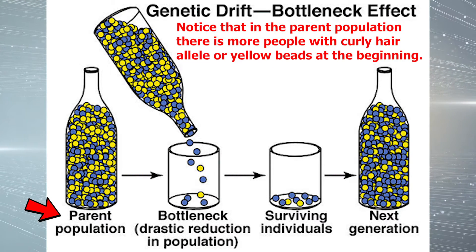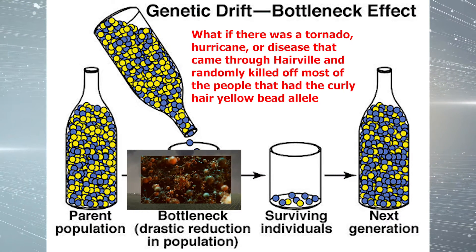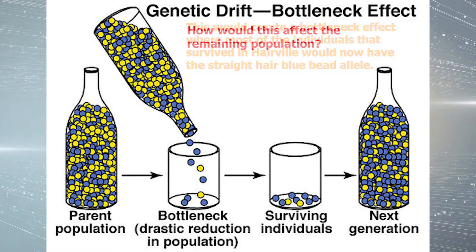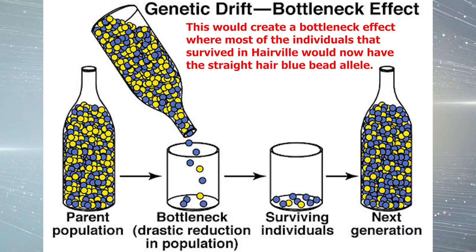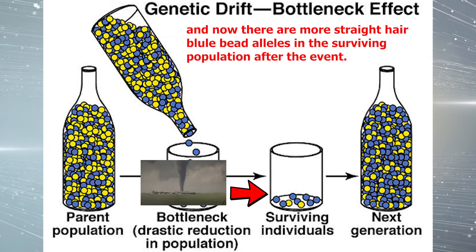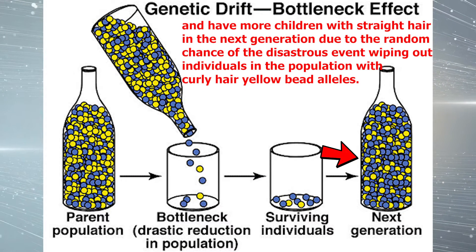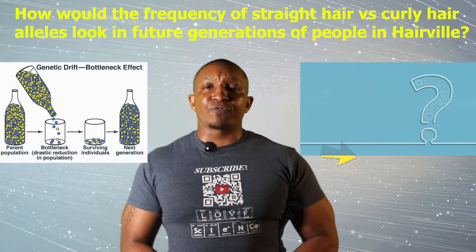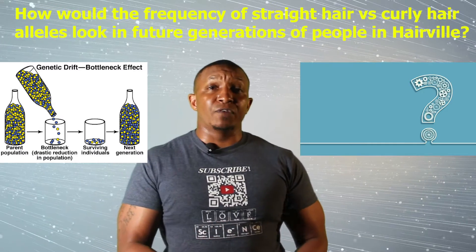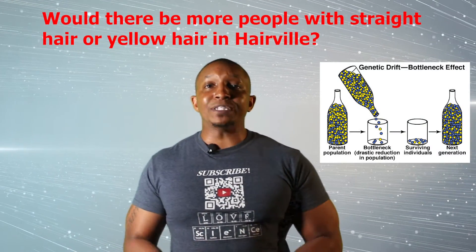Notice that in the parent population, there are more people with the curly hair allele — the yellow beads — at the beginning. Now, what if a tornado, hurricane, or disease came through Hairville and randomly killed off most of the people with the curly hair yellow bead allele? This would create a bottleneck effect where most of the individuals that survived would now have the straight hair blue bead allele. Notice how there were more curly hair yellow bead alleles before the disastrous event and now there are more straight hair blue bead alleles in the surviving population. Think about how the frequency of straight hair versus curly hair alleles would look in future generations. Would there be more people with straight hair or curly hair in Hairville? If you know the answer, please respond in the comment section below and tell us how you know.